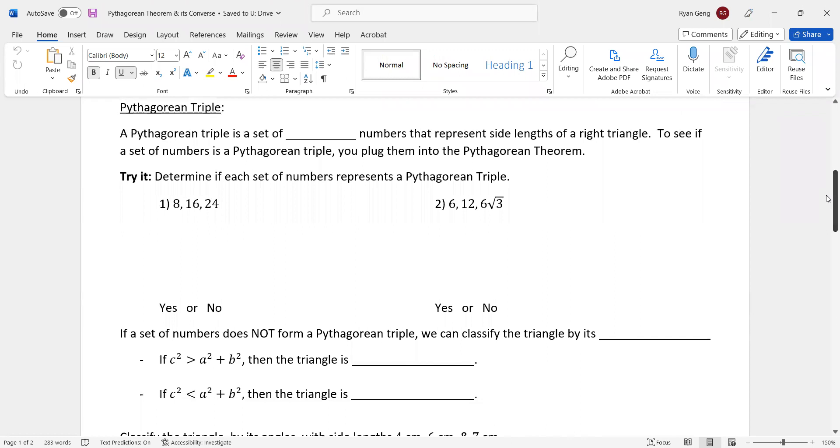Some of the new stuff. A Pythagorean triple. A Pythagorean triple is a set of three numbers, triple comes in, that represent side lengths of a right triangle. To see if a set of numbers is a Pythagorean triple, you plug them into the Pythagorean theorem. If it works, like if the numbers of the left side and the right side are equal, it is a Pythagorean triple. If they're not equal, then it's not a Pythagorean triple. You know this, but the hypotenuse has to be the longest side.